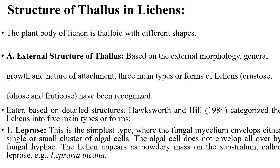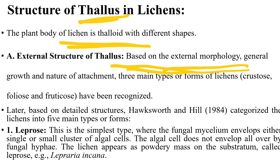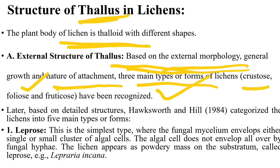The plant body of lichen is thaloid with different shapes. Based on morphology, general growth, and nature of attachment, three main types are recognized: crustose (crust-like), foliose (leaf-like), and fruticose (bush-like, attached to the substratum by a disc). Later, Hawksworth and Hill in 1984 categorized lichens into five main types.